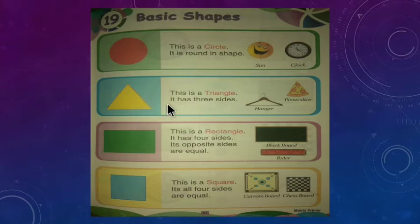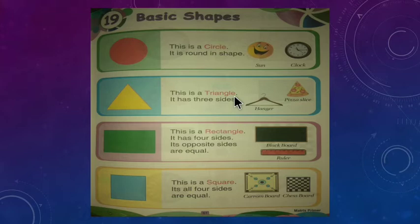Which shape is it? This is a triangle. What shape is it? This is a triangle. It has three sides. Aur iski three sides hoti hai.